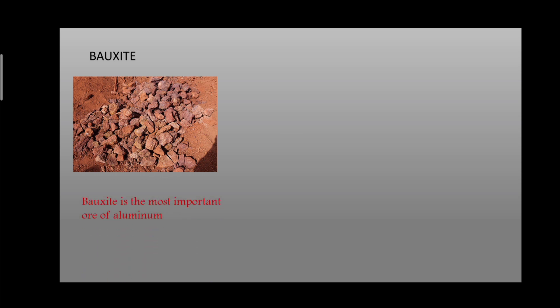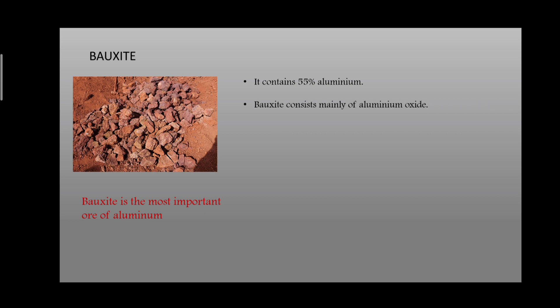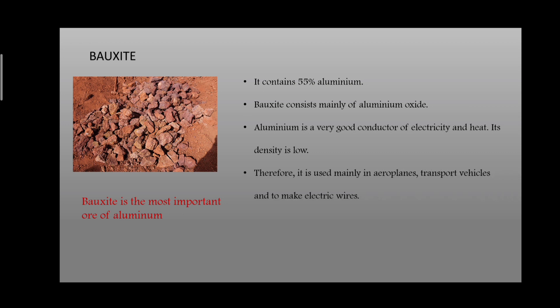Next we have bauxite. Bauxite is the most important ore of aluminium and contains about 55 percent aluminium, mostly in the form of aluminium oxide. Aluminium is a very good conductor of electricity and heat. Its density is very low — that is why a plate made of aluminium can float on water. Because of its low density, aluminium is used in airplanes, transport vehicles, and electrical wires.